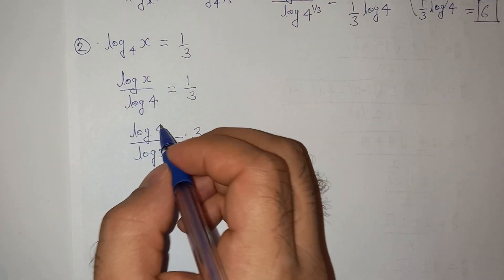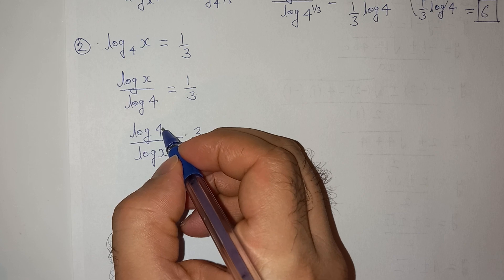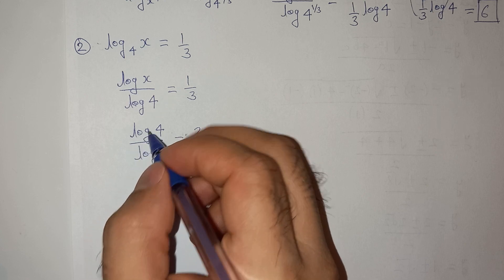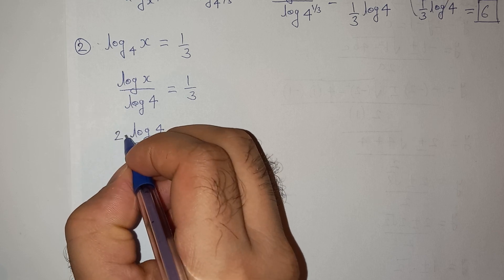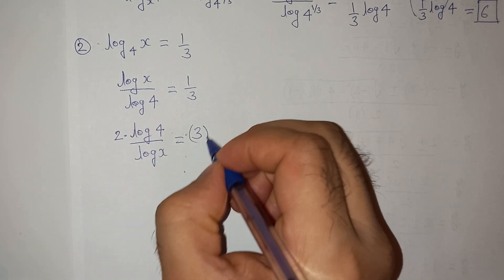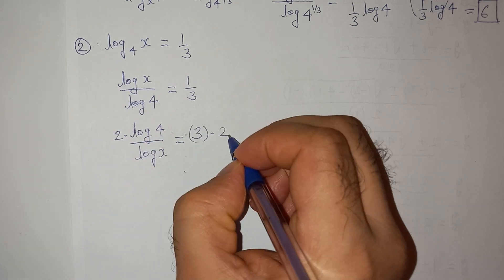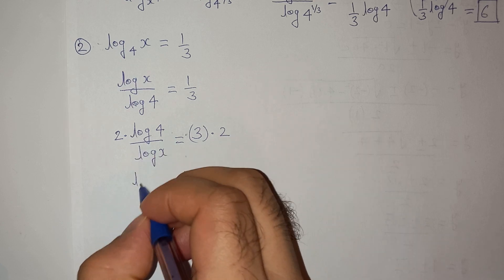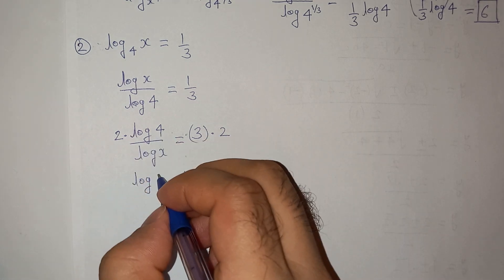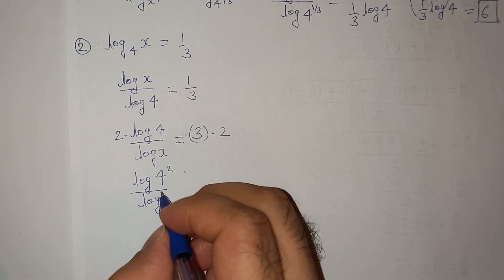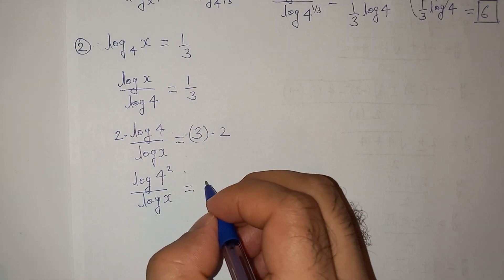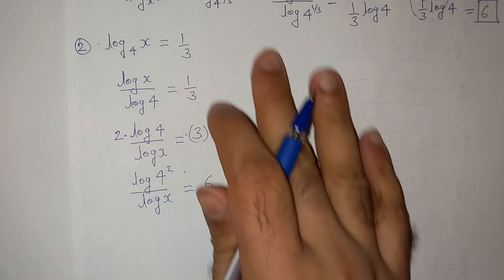Now, since I have to convert this log(4) to log(16), I am going to multiply the numerator with 2, which means I have to also multiply 2 on the right-hand side. So this can be written as log(4²)/log(x) equals 3 × 2, which is 6.